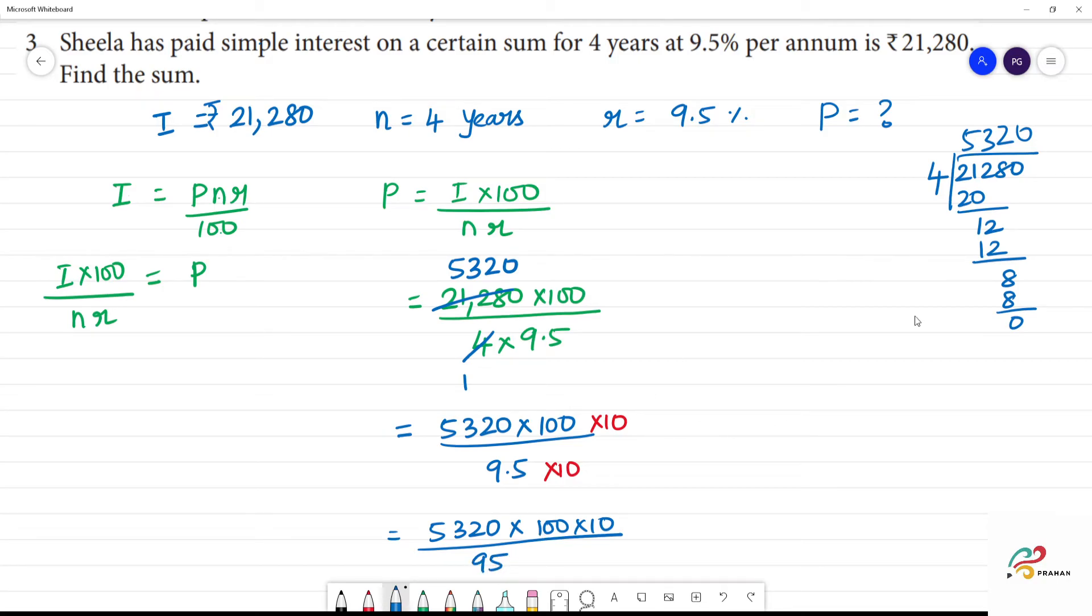Now we divide 5,320 by 95. 5 times 95 is 475, giving 5 with remainder. Continuing the long division: 95 into 282 gives 2, 95 into 920 gives 9, 95 into 650 gives 6, completing to get 56.